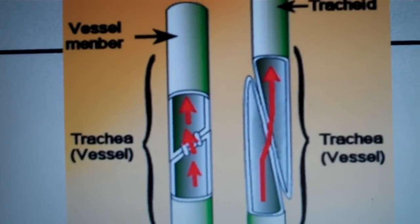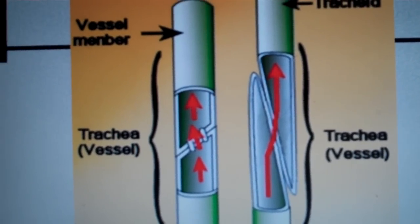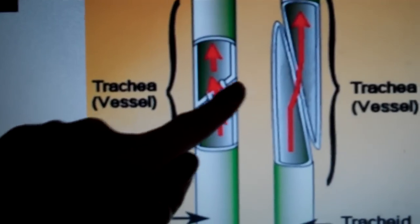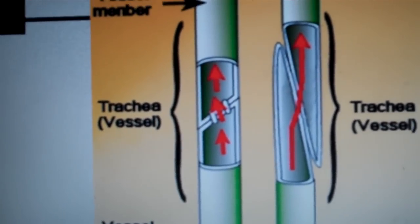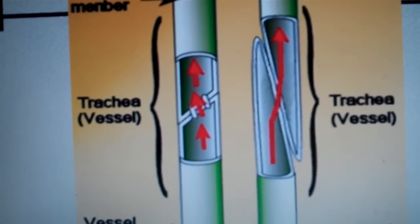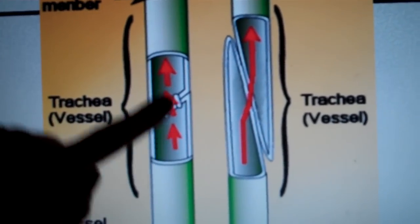The vessel elements are shorter, wider, and they're thinner walled. They are aligned end to end like this. The ends are perforated, which means they have holes, and this allows water to pass freely between them.